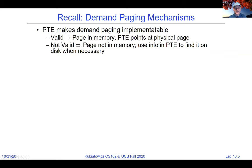Rank can correspond to cache size — if I can hold the 16 most popular pages, that's a rank of 16. With this distribution there's substantial value from a tiny cache, but very rapidly diminishing returns because of the long tail. There are substantial misses even with a large cache.